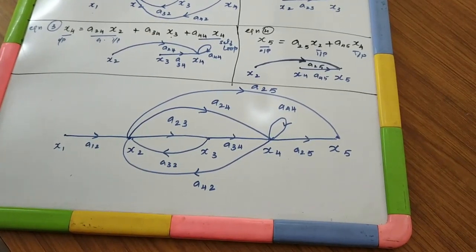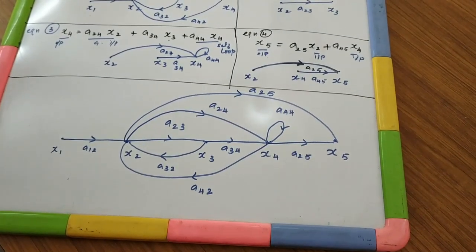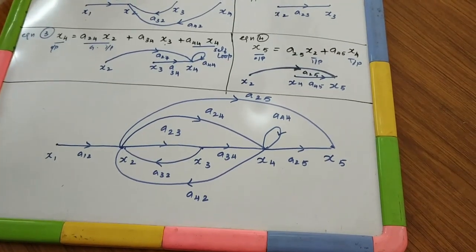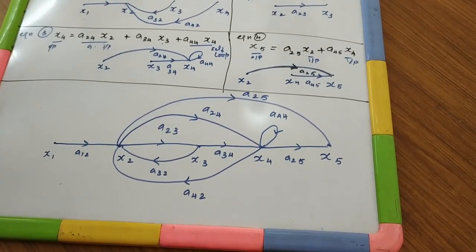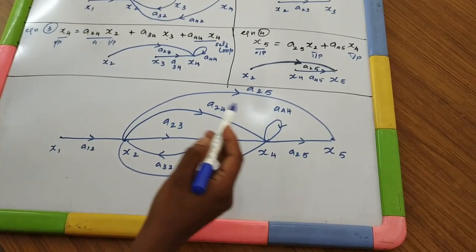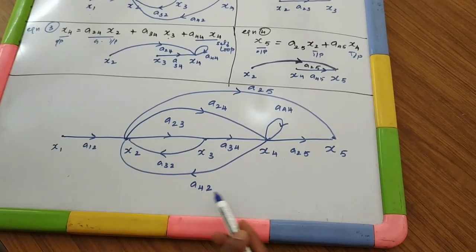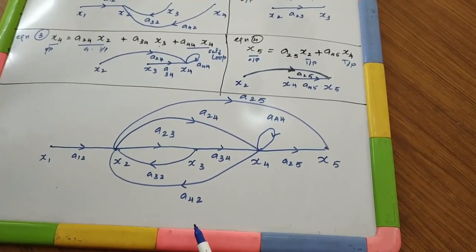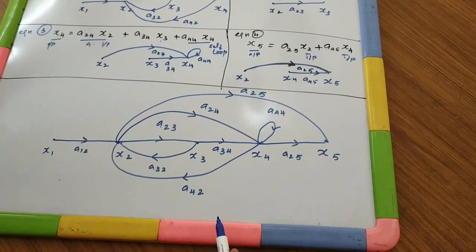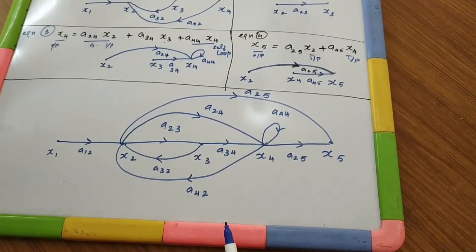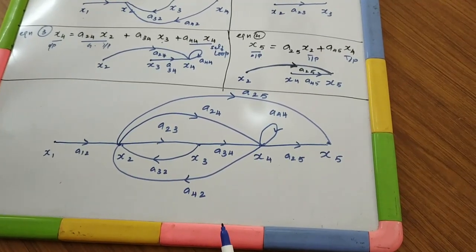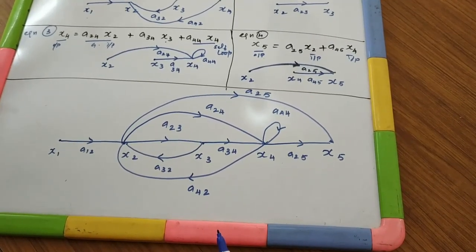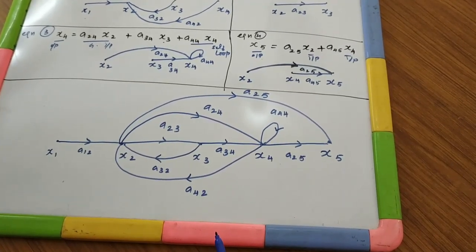This is the final signal flow graph obtained from the given set of equations. From this obtained signal flow graph, by using Mason's gain formula, we can obtain the transfer function for the given set of equations. We will meet in the next video. Thank you.